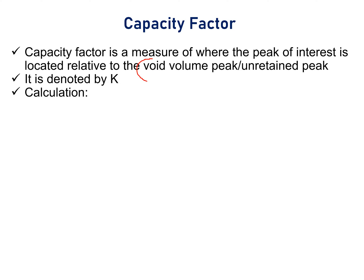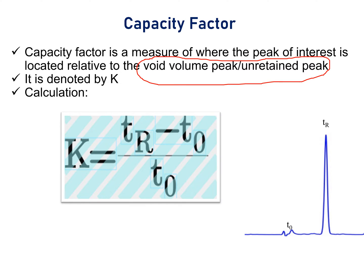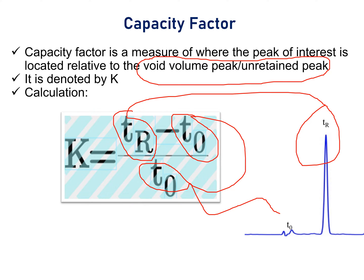About the void volume peak or unretained peak, I have already discussed in details in the previous video. I would like to request you to watch that video for better clarification on this topic, that is capacity factor. It is calculated by the formula K equals Tr minus T0 divided by T0, where Tr is the retention time of the peak of interest, means analyte peak. T0 is the retention time of the void volume peak.